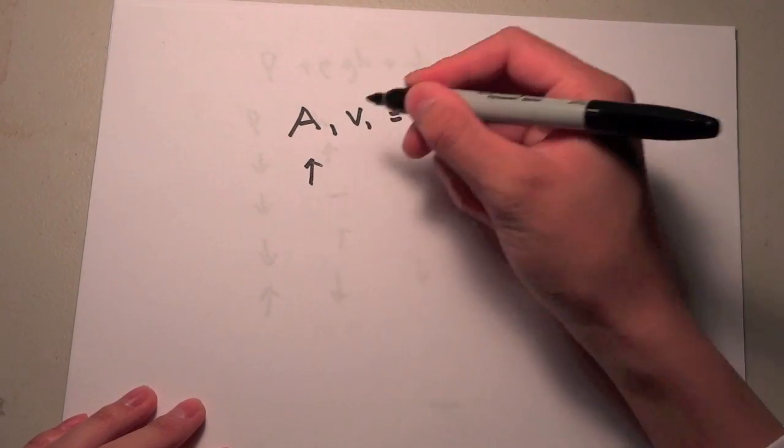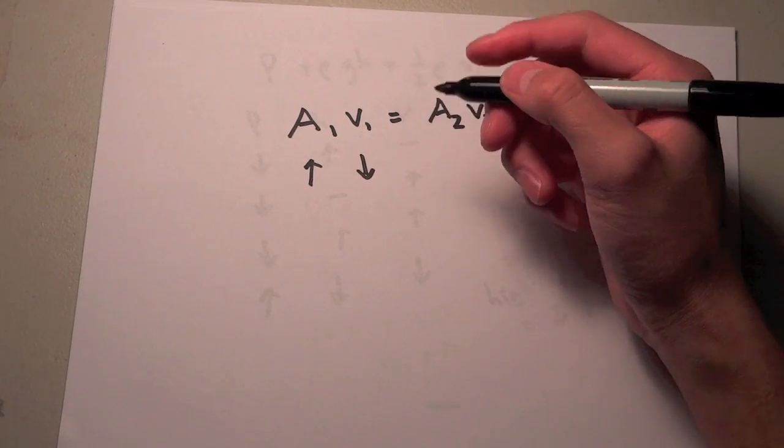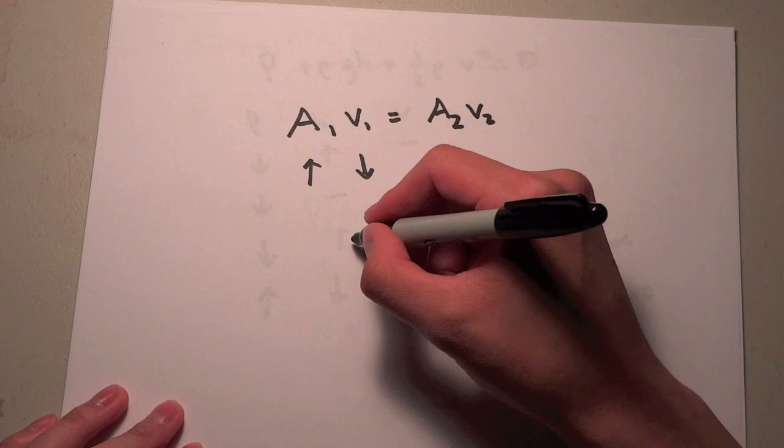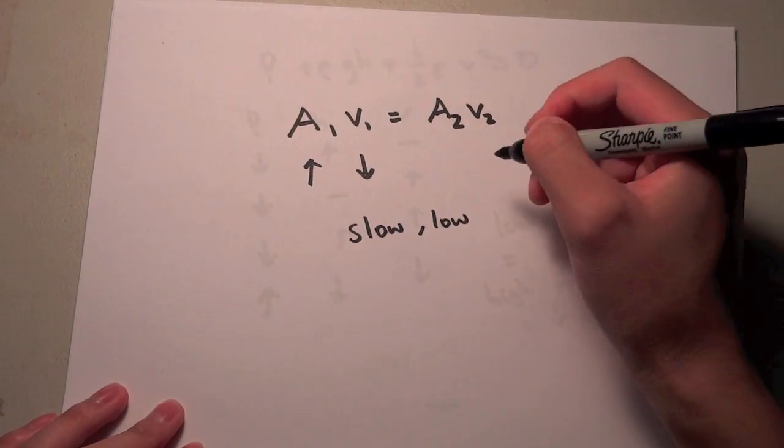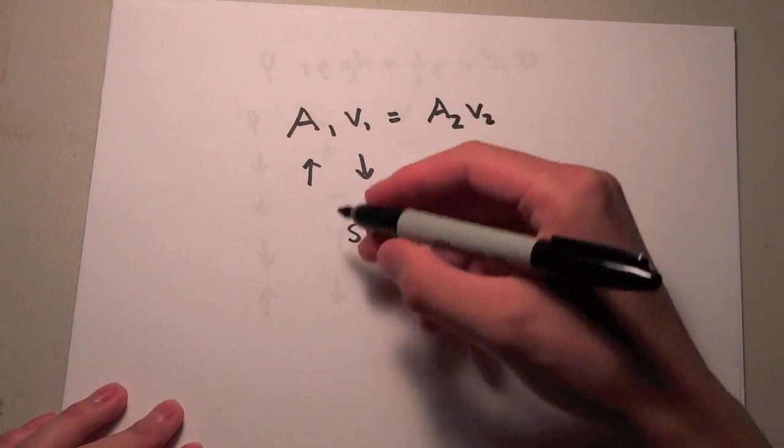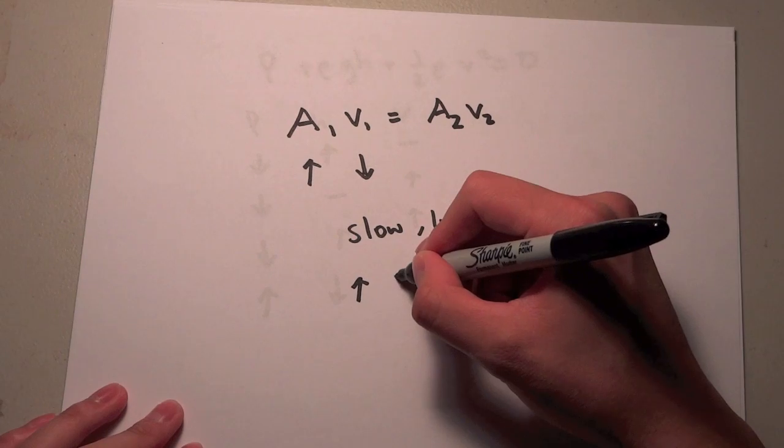So when we increase the area, we're going to have to decrease the velocity. So remember we wanted a slow velocity. So we wanted something that was very slow and also low to the ground. So that means we would want, in order to get something slow, we would want a very big cross-sectional area.